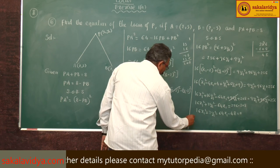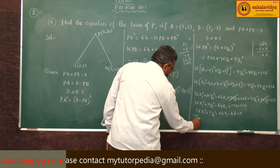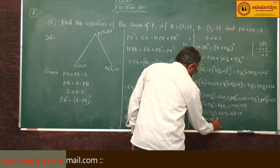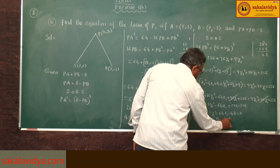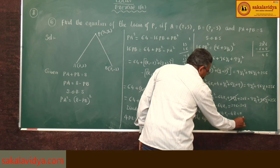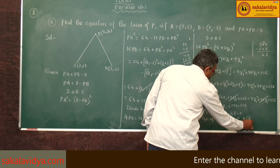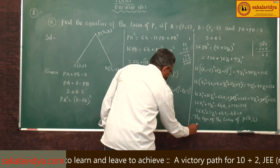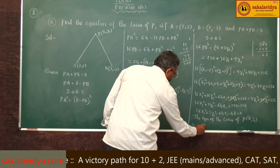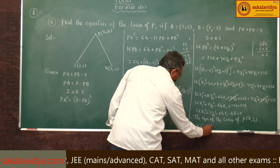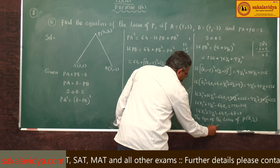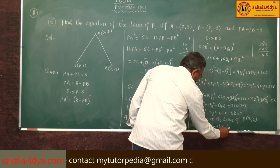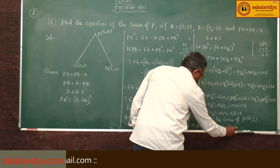Therefore, the equation of the locus of P(x1, y1) is 16x² + 7y² - 64x - 48 = 0.